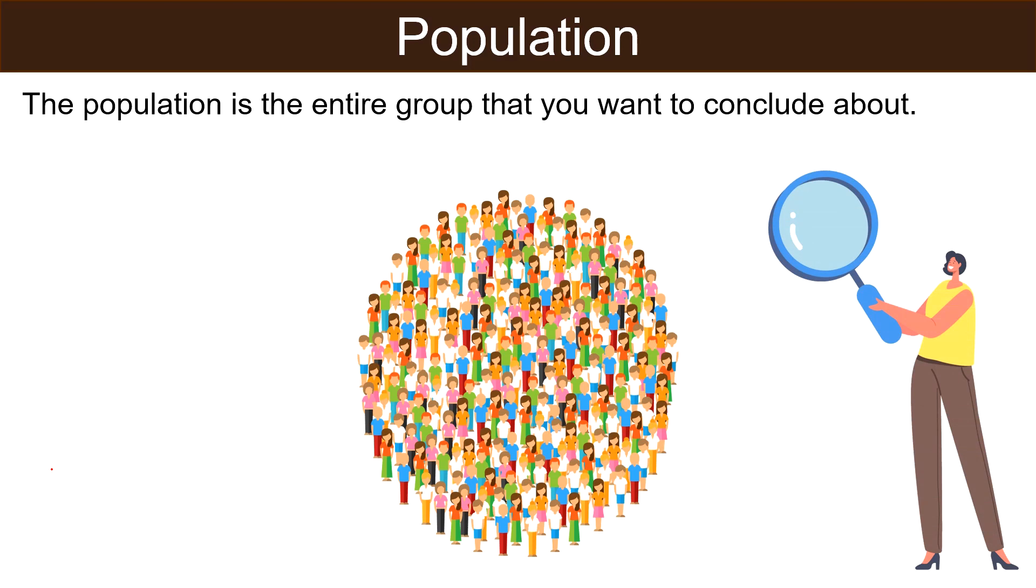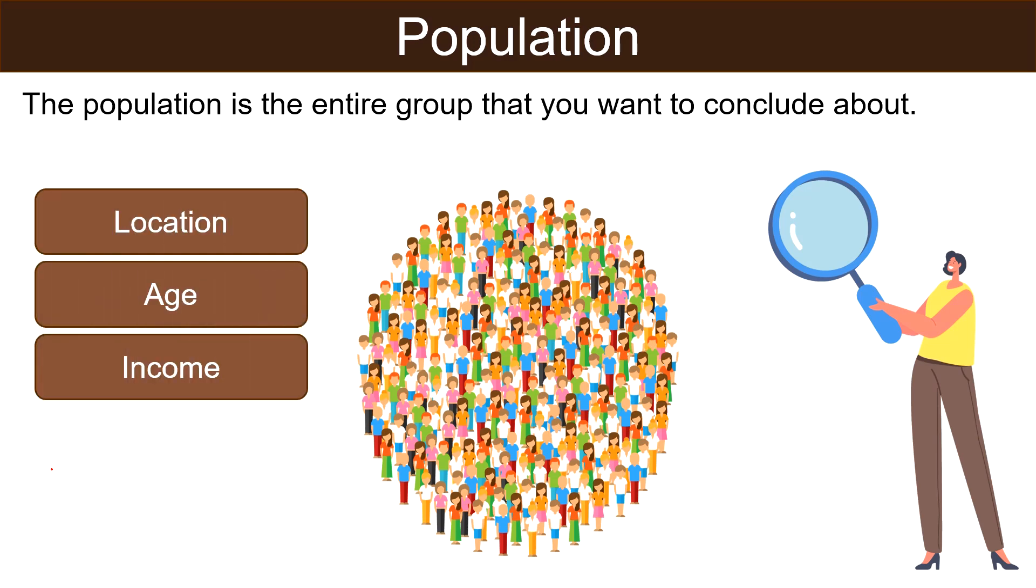It is also known as target population. The population can be defined in terms of geographical location, age, income and many other characteristics. The population element consists of characteristics or attributes of the subjects that meet the specified set of criteria of the interest to the researcher.